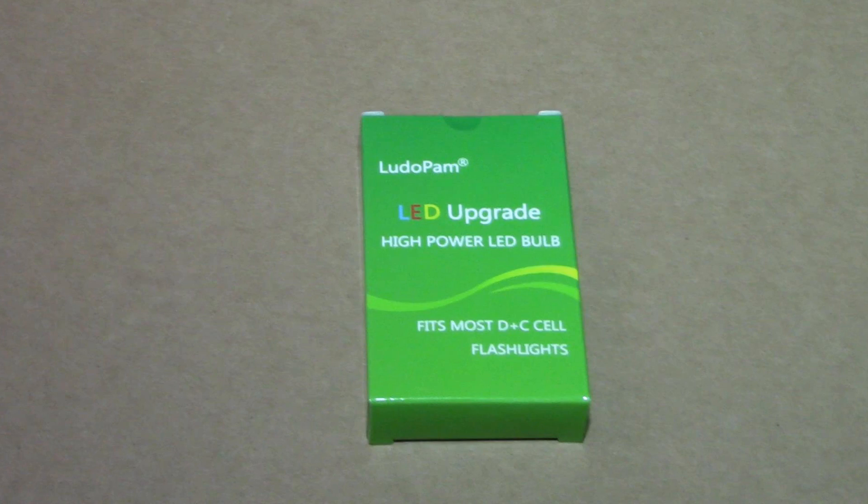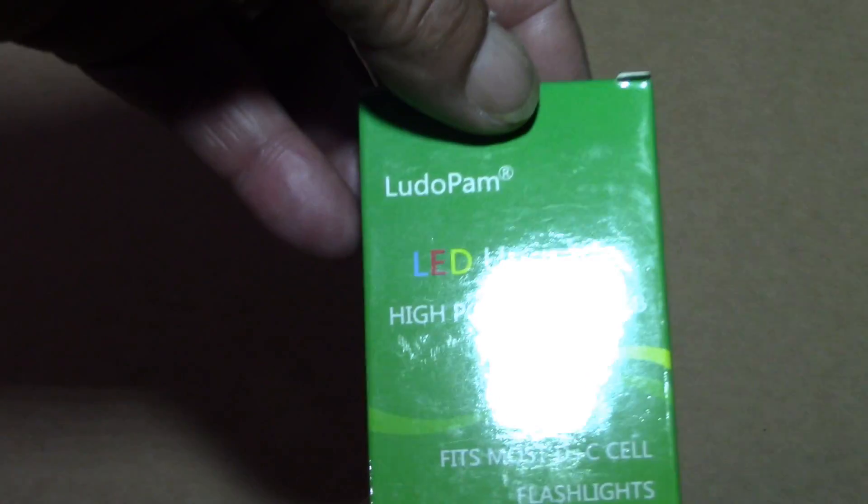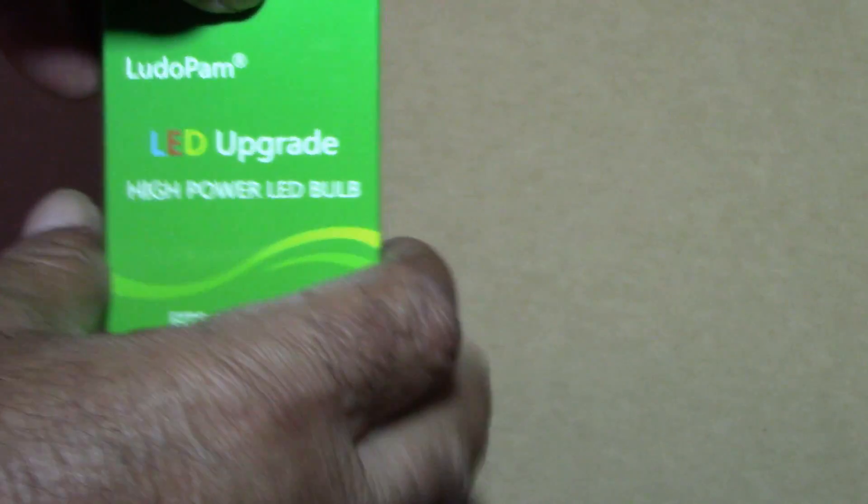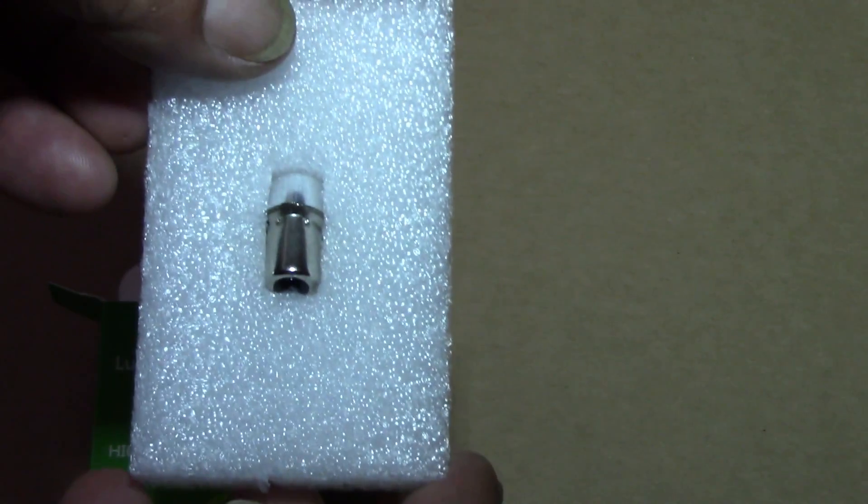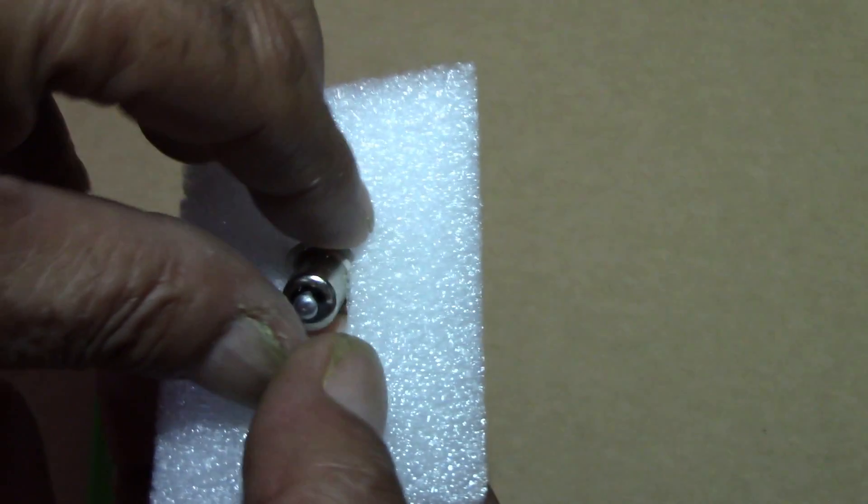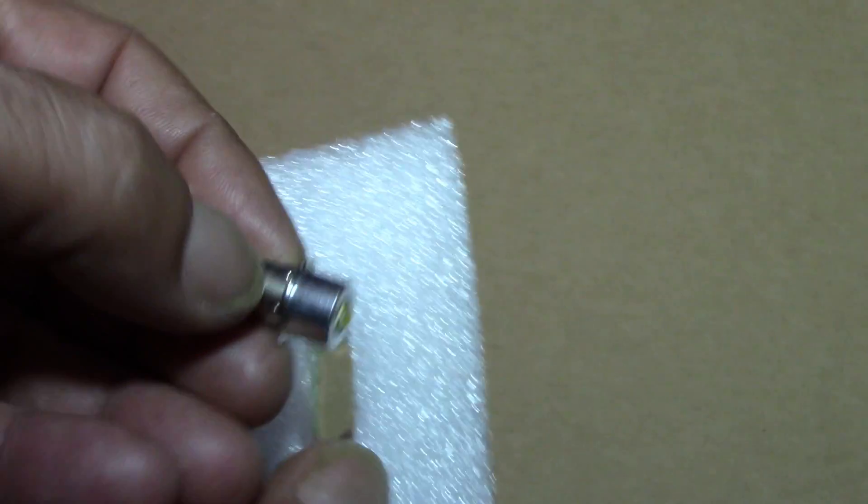this 12-volt conversion kit bulb from Amazon. It's a high-power 3-watt LED bulb for 4 DC battery type flashlights, but will also work on three to six cell type C or D batteries. I'll leave a link in the description.